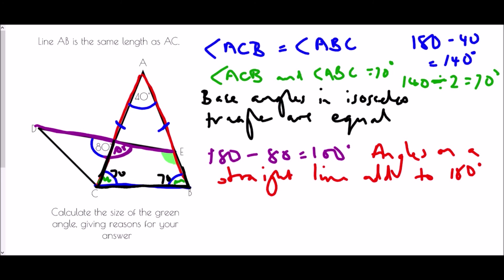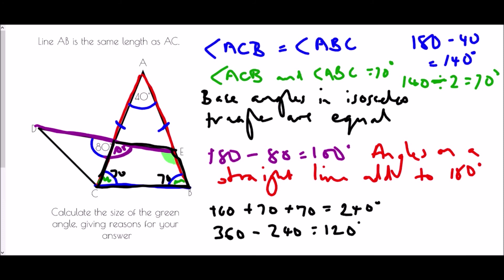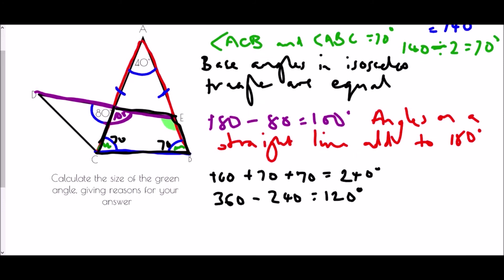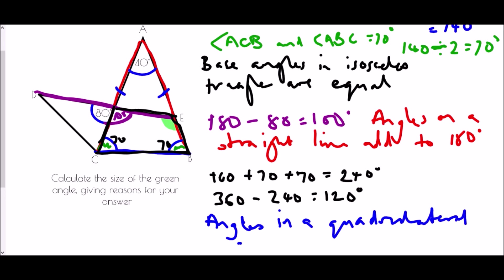Now we have three out of four angles within a quadrilateral: 100 plus 70 plus 70 gives 240 degrees. To find the missing angle — the one we actually want — we do 360 take away 240, which equals 120 degrees. The reason: angles in a quadrilateral add up to 360 degrees. So the missing angle is 120 degrees.